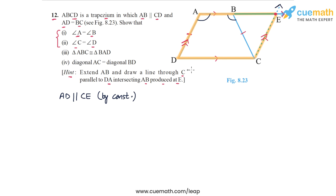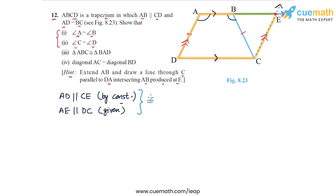Also, the other pair of sides, DC and AE, are parallel because AB is parallel to DC — those are the parallel sides of the trapezium. So AE is also parallel to DC since AE is simply AB extended. Therefore, both pairs of opposite sides are parallel, and we can conclude that ADCE is a parallelogram.